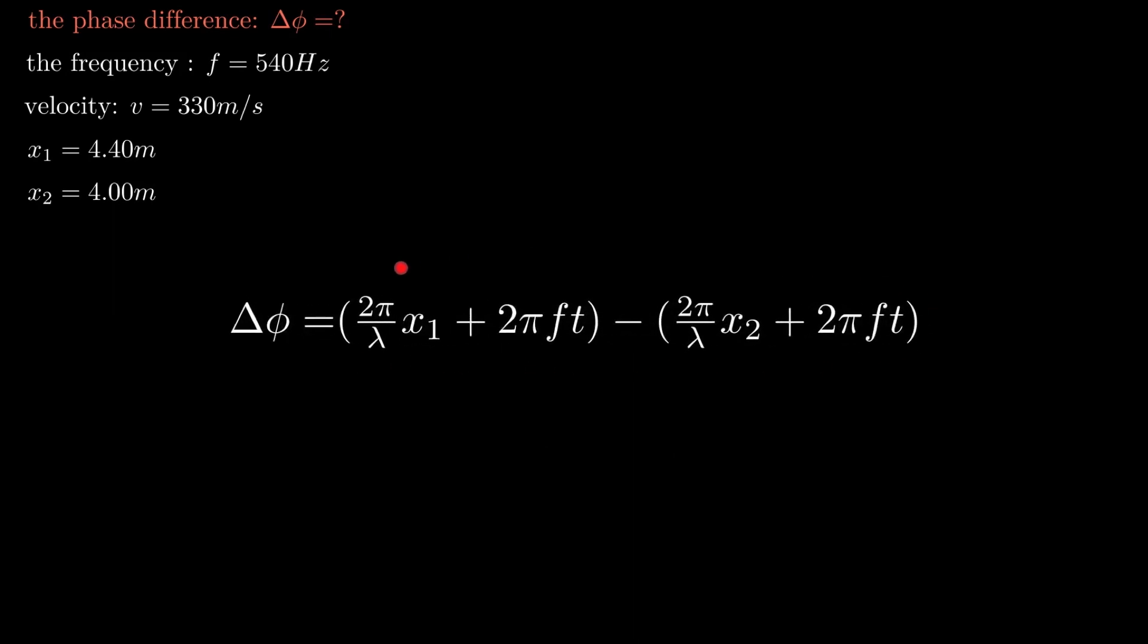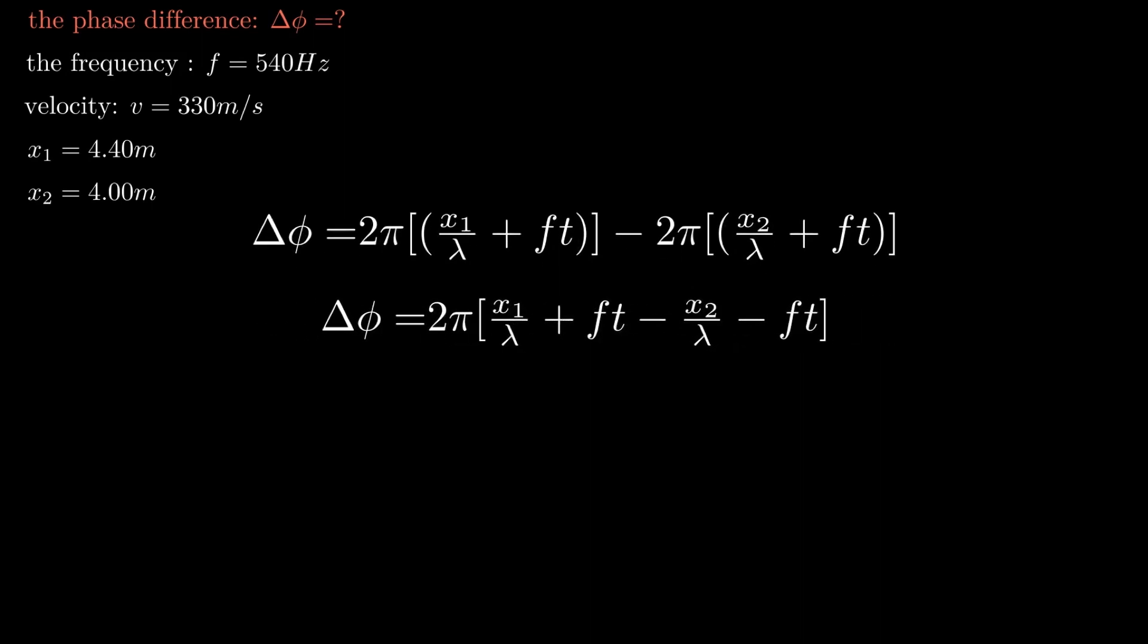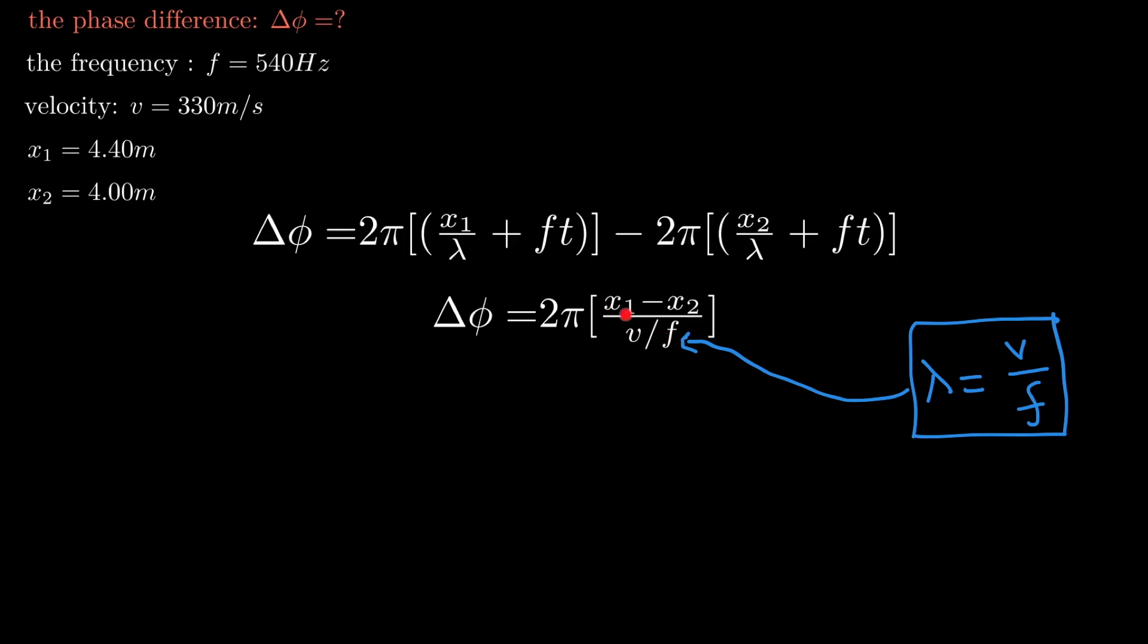Our equation will become like this. After rearranging, the omega t terms cancel out and lambda is common, so we get this form. Wavelength is given by the equation wavelength equals velocity divided by frequency. We will replace this here, then we get this expression.